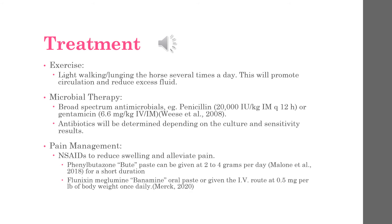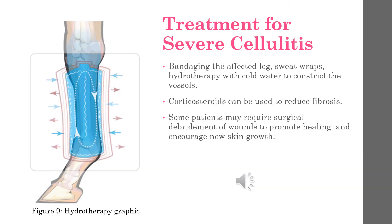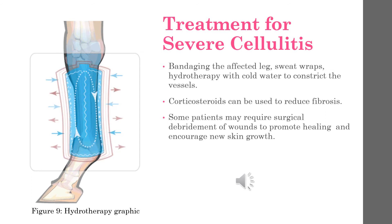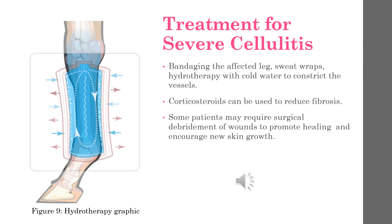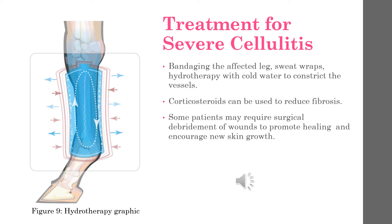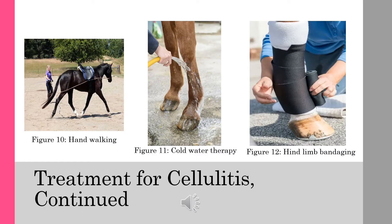Banamine paste can be used as well. If an animal has severe cellulitis, bandaging the affected limb using sweat wraps, or hydrotherapy with cold water to constrict the blood vessels, may be of value. Corticosteroids can be utilized to reduce fibrosis, and some patients may actually require surgical intervention with debridement of the wounds to promote healing and encourage new skin growth.